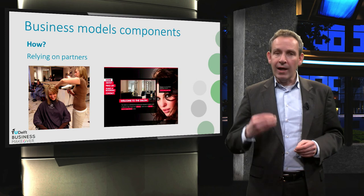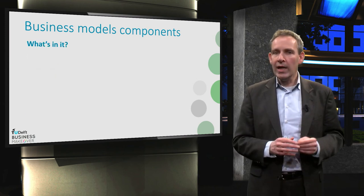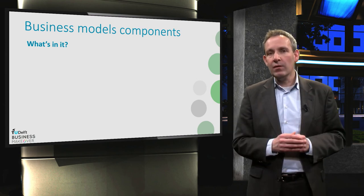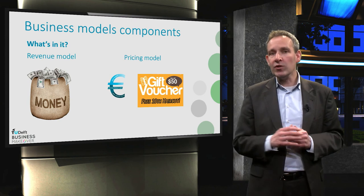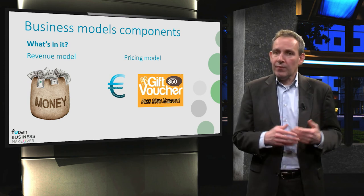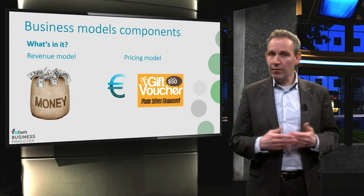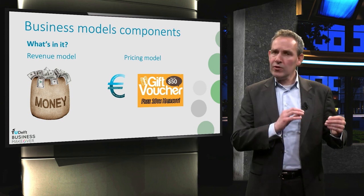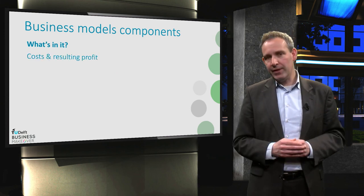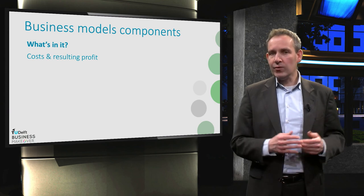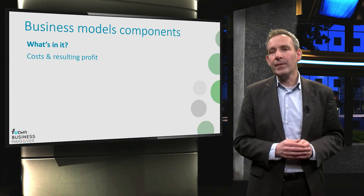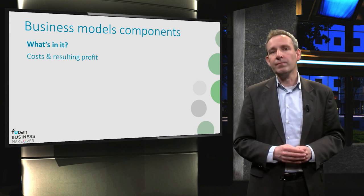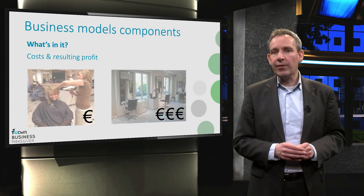The fourth and final question is what's in it — in what way will you generate money for your firm? This is about revenues and pricing. What price do you charge for a haircut or dyeing one's hair? Maybe you could offer a subscription for six haircuts during the year for a reduced price, or offer a voucher for a free tenth haircut. But it is also about costs and resulting profits. The hairdresser has to pay for resources like personnel and the rent for the salon. The bottom line of course is whether enough revenues are made to cover all the costs. We'll get back to what's in it in the third block.